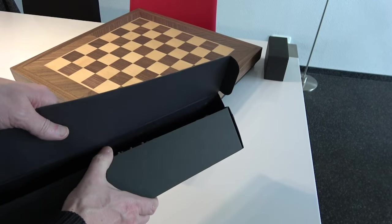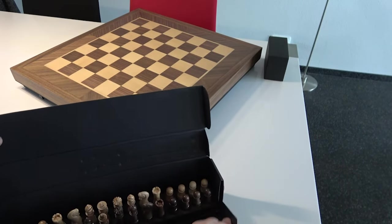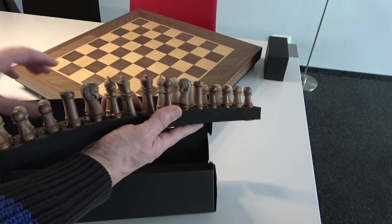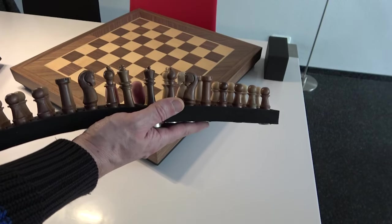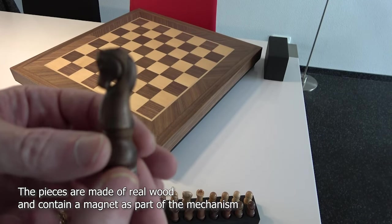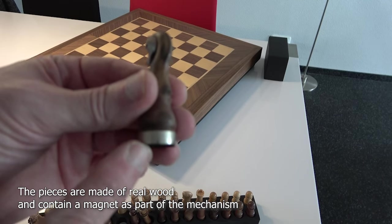Inside this box should be the pieces. That's right. Let's get them out. Carefully packed in foam. That looks very nice. And they are made out of real wood, walnut I think. And the first thing you'll notice is this metal base.